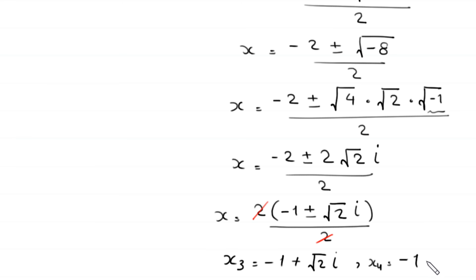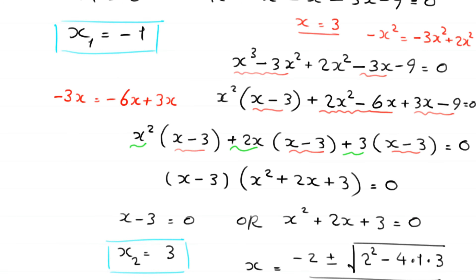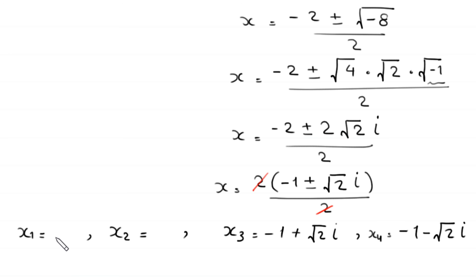The four solutions of the equation are: x₁ = -1, x₂ = 3, x₃ = -1 + √2·i, and x₄ = -1 - √2·i. These are all the solutions of this equation.